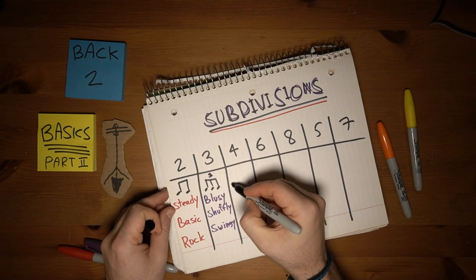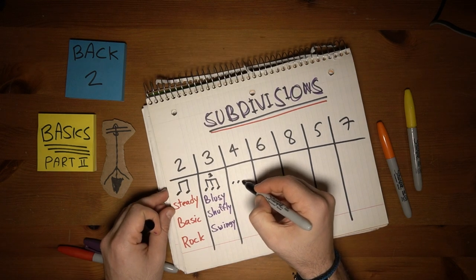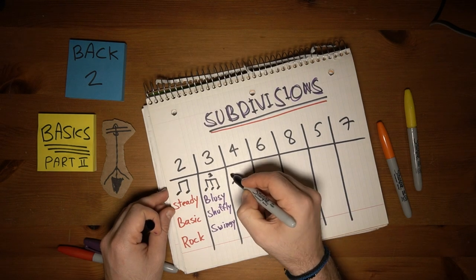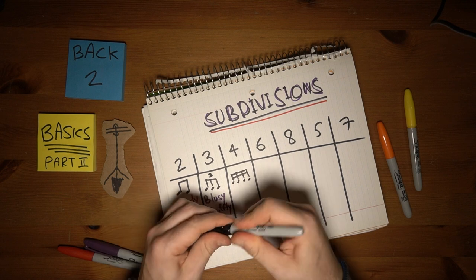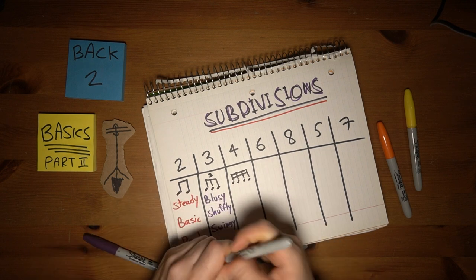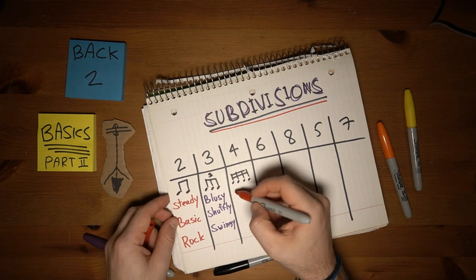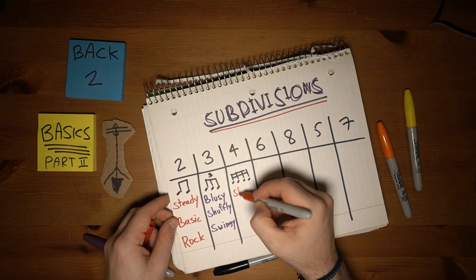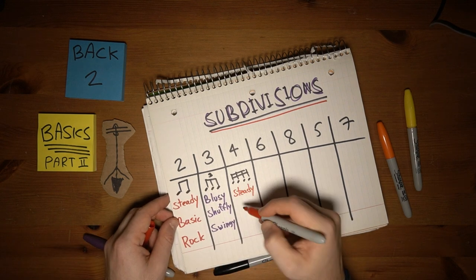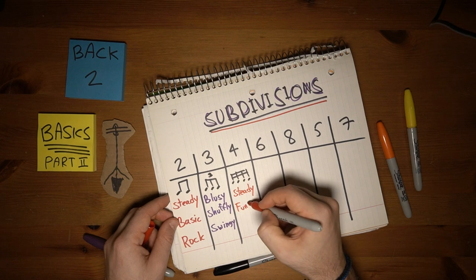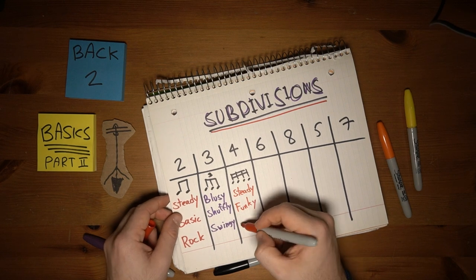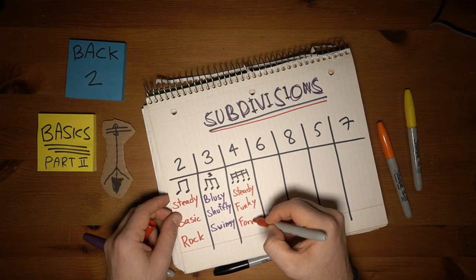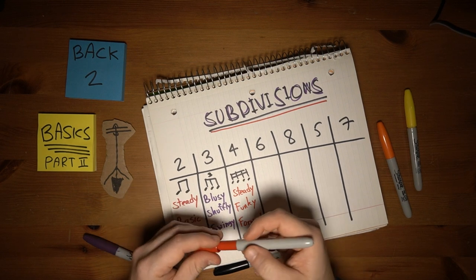Dividing a quarter note into 4 pieces gives us 16th notes. This is also steady, like the 8th notes, but a bit denser. I get a funky, more forward kind of vibe from this one.